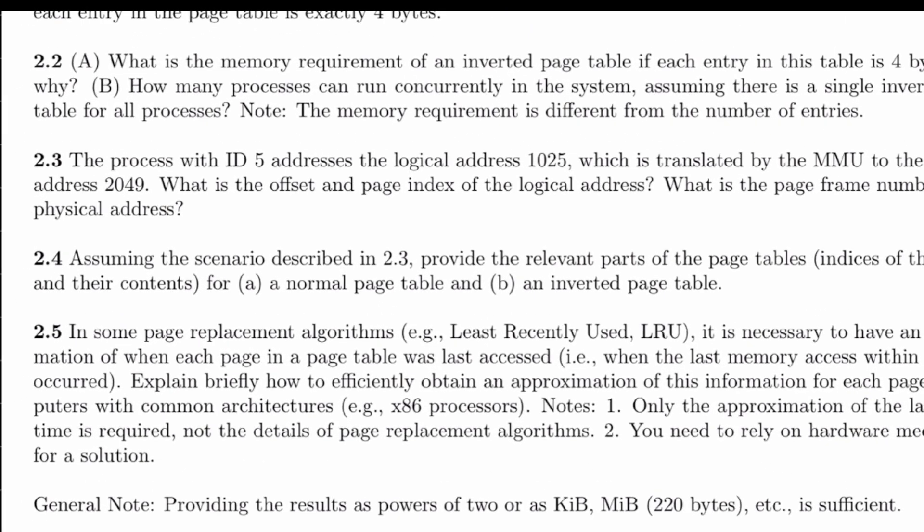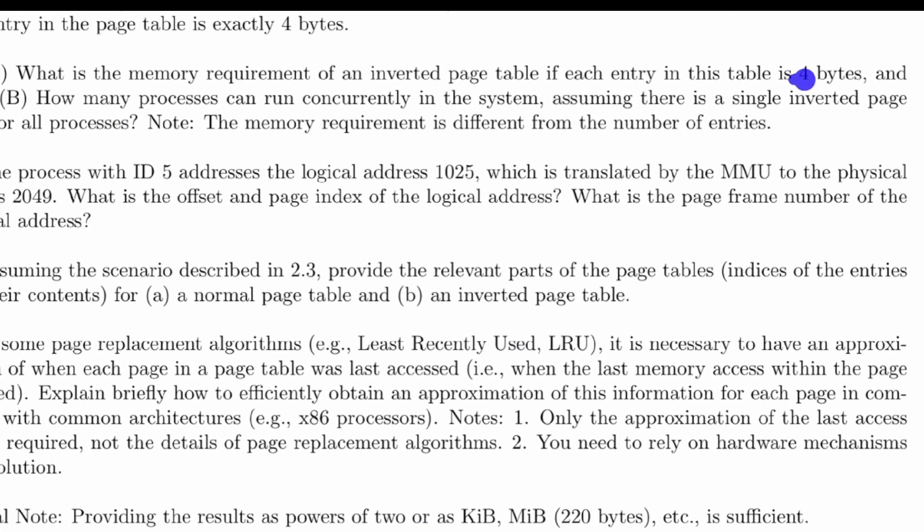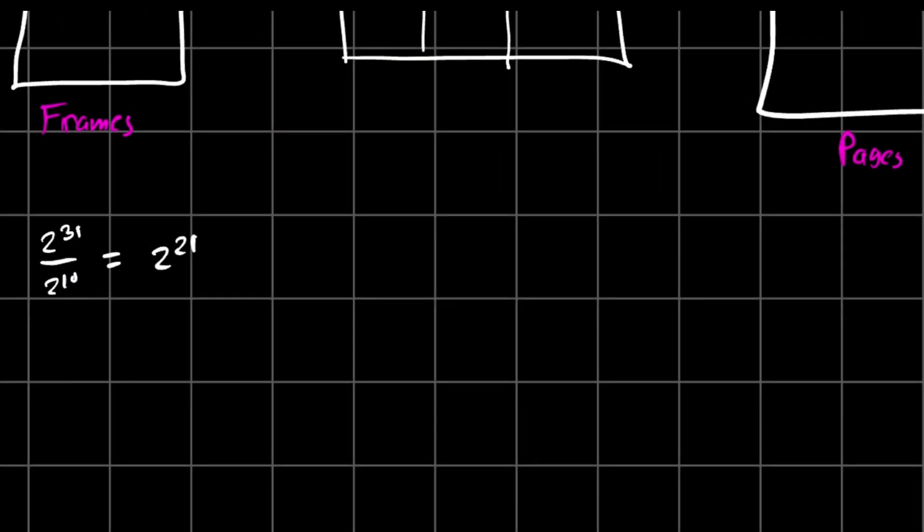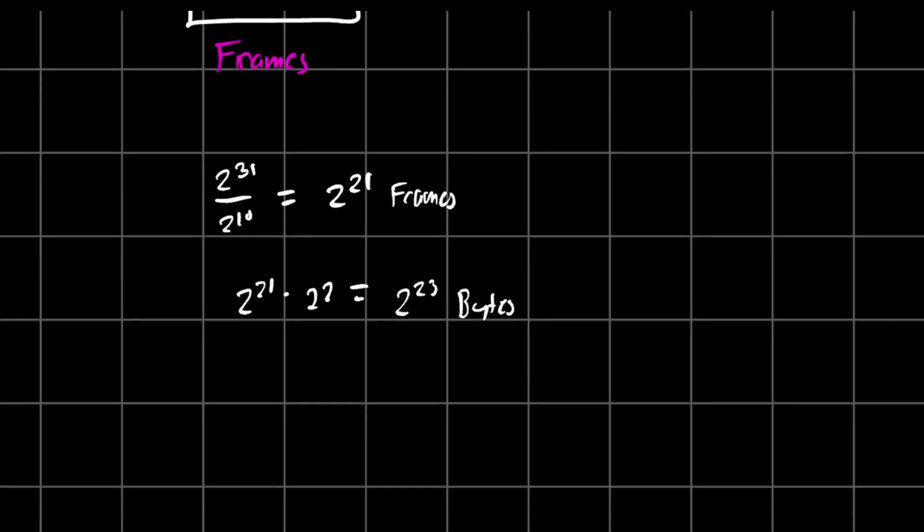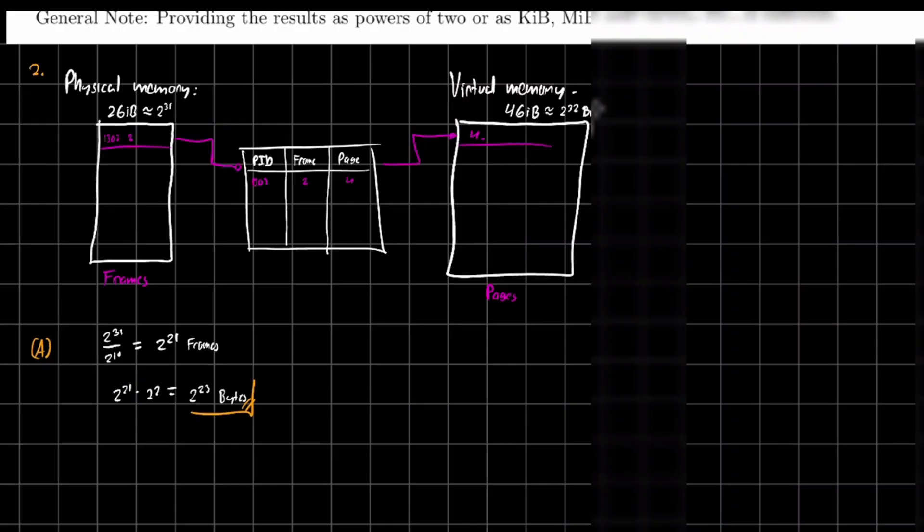And they are telling us, we have 4 bytes for each entry. So that means we have to multiply this by 4. Why? Because this is the number of pages, or frames, so to speak. Frames. Because this is not pages no more. So we multiply 2 to the 21. So 2 to the 21 times 2 squared is going to be 2 to the 23. And that's going to be bytes. And that's going to be the answer. So this is the answer for A. We need 2 to the 23 bytes to run this, to have this.